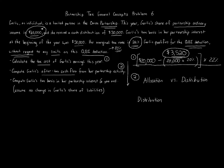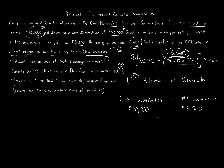We take the cash distribution of thirty thousand dollars and subtract the tax from question one — three thousand five hundred twenty dollars — because that's the taxes actually owed on the return for the year. So the after-tax cash flow equals thirty thousand minus three thousand five hundred twenty, which is twenty-six thousand four hundred eighty dollars. That is the answer to question two.